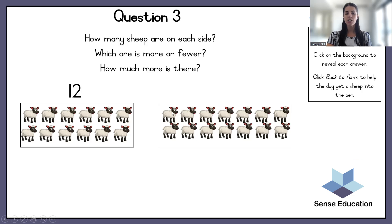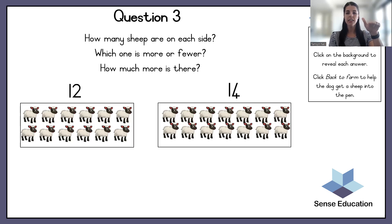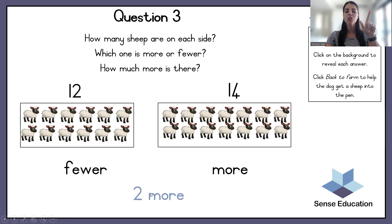How many are in this block? 2, 4, 6, 8, 10, 12, 14. There are 14 in this one. Which one is more or fewer? Well, 14 is definitely more and 12 is fewer. How much more is there? We want to know the difference between 12 and 14. You can count from 12 to 14, or you could say 14 minus 12. Today we're going to count on: 13, 14. There are two more sheep.